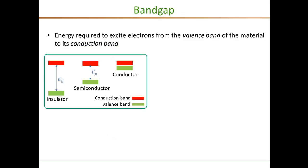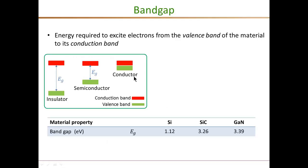That brings us to a brief discussion on wide bandgap devices. First of all, what is the band gap? The band gap is the energy required to excite electrons from the valence band of the material to its conduction band, as shown in examples of an insulator, semiconductor, and conductor. For silicon, the band gap is 1.12 electron volts, silicon carbide is 3.26 electron volts, and gallium nitride is 3.39 electron volts — qualifying silicon carbide and gallium nitride as wide bandgap devices.